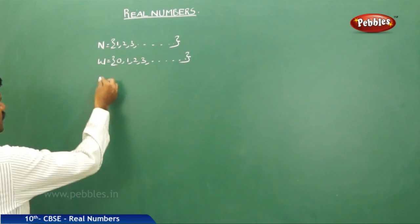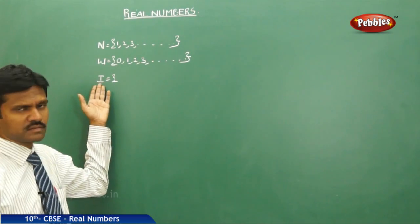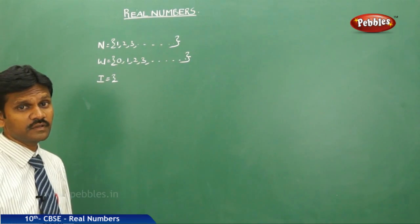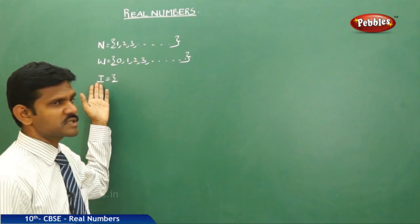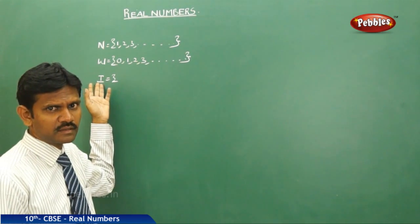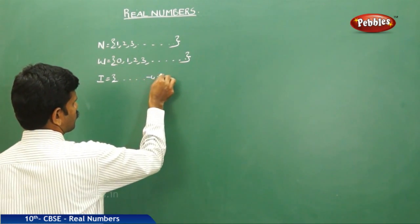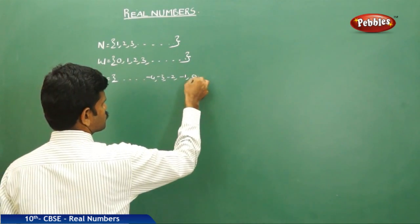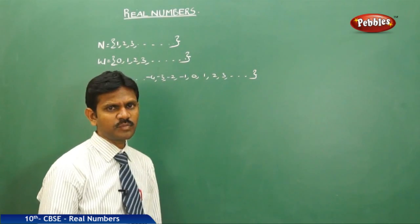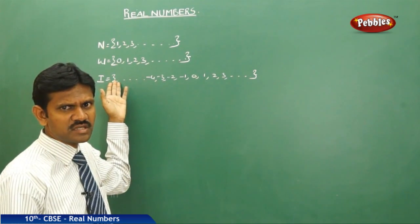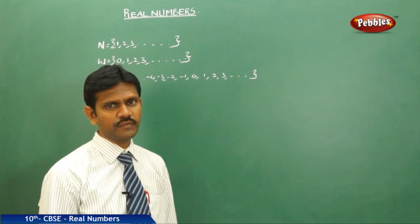Next, what is meant by an integer? The set of integers is formed by grouping negative numbers and positive numbers together with 0. Integers are denoted by the letter I or Z. That is, {..., -4, -3, -2, -1, 0, 1, 2, 3, ...} and so on. The least number of the integers cannot be defined and, at the same time, the maximum number of the integers also cannot be defined.